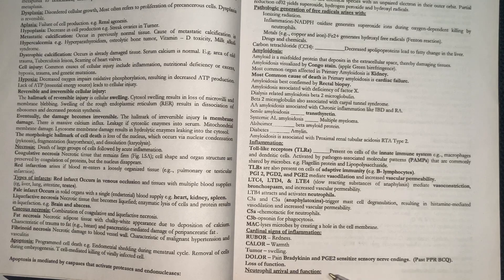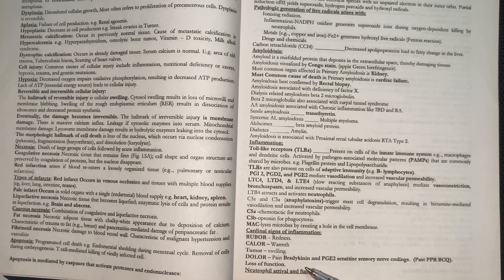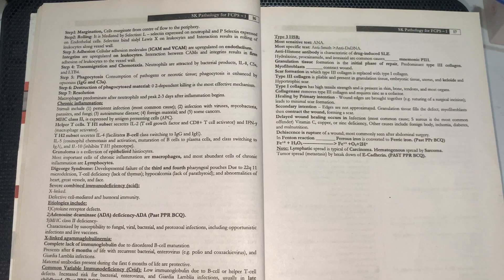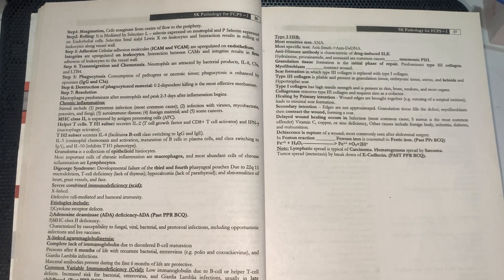Neutrophil arrival and function: First, margination — cells migrate from the center to the periphery of the vessel. Then rolling — rolling occurs through L-selectins and P-selectins on endothelial cells. Selectins on leukocytes bind with Sialyl-Lewis X, and the leukocytes roll along the vessel wall.